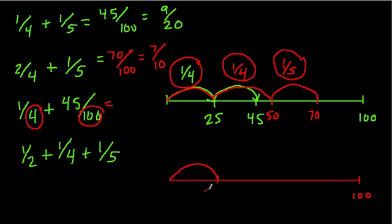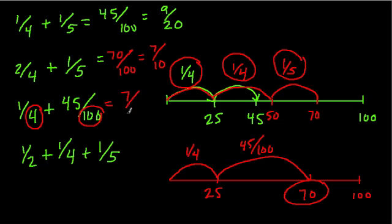So when I hop a fourth of the way, I'm hopping up 25, because 4 goes into 100 25 times. So that's one-fourth of the way. And now, to that, I'm adding 45 out of 100. So I'm just going to add 45 to this number. So what's 45 plus 25? That's 70. All the way up here. That's 45 out of 100. So one-fourth and 45 out of 100 brings us to 70 out of 100, or 7 tenths, just like we got before.